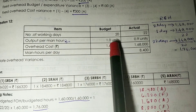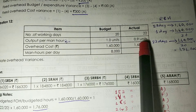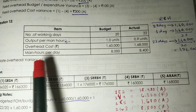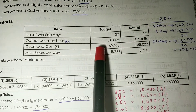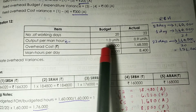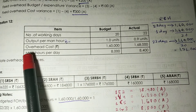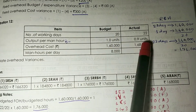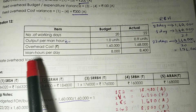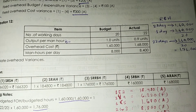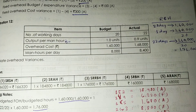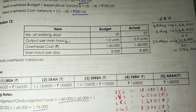In this question, a few pieces of information are given. Number of working days: budgeted is 20 days and actual is 22 days. Output per man hour: budgeted is 1 unit per man hour and actual is 0.9 units per man hour. Overhead cost and man hours per day are also given.